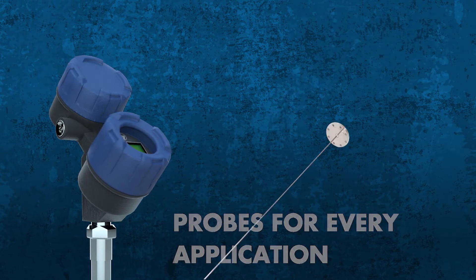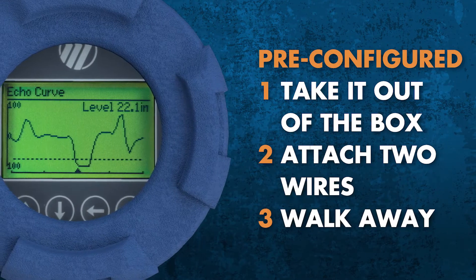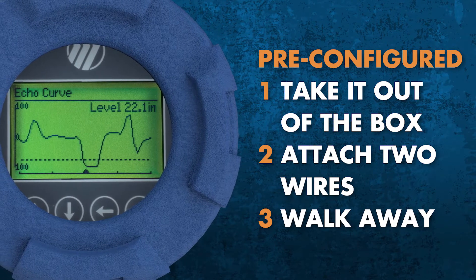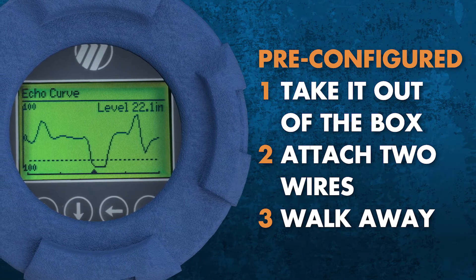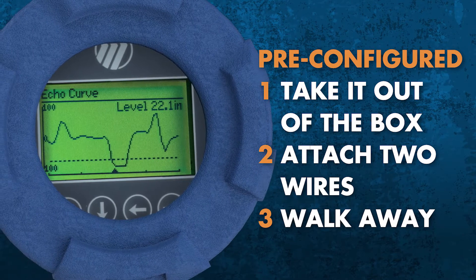The Model 706 is even plug-and-play. You can have it pre-configured prior to shipment to take the guesswork out of setup. That means you simply take it out of the box, attach two wires, and walk away.